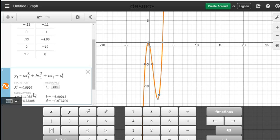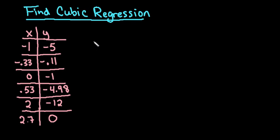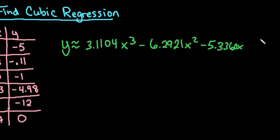Then you would just report the equation formed by this dataset. We would take these numbers here and plug them in for a, b, c, and d. I'm going to round to four decimal places. We would write: y is approximately 3.1104x³ minus 6.2921x² minus 5.3360x minus 0.9737. This is the equation that models this dataset to four decimal places.